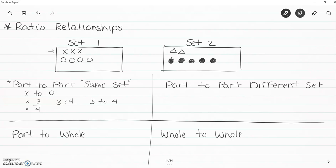The next ratio relationship is part-to-part, different set — you're not staying within a single set, but comparing parts from two separate groups. An example is X's to triangles: taking part of set one and part of set two. X's come first so they go on top, triangles go on the bottom — that's three to two. No simplifying required. Three colon two, and three to two.